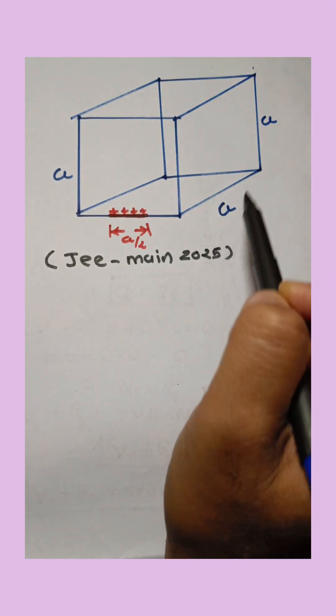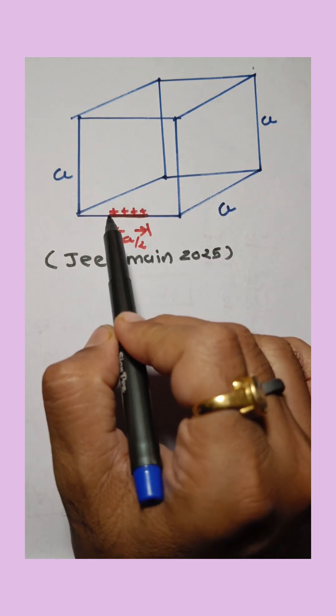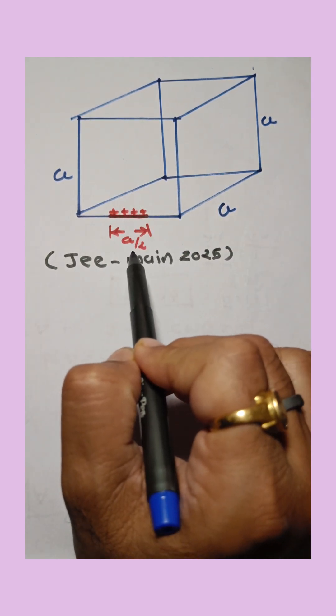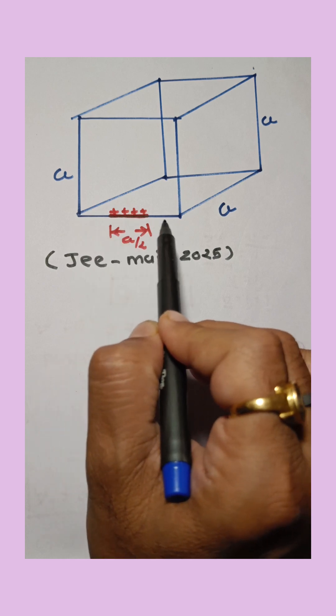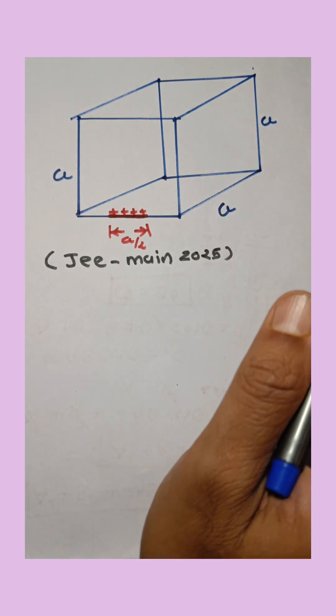JEE-Main 2025 question. Length of each side of cube is given as a. A charged straight wire of length a/2 is placed on the edge of the cube. Find out the total flux linked with the cube.